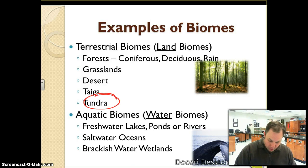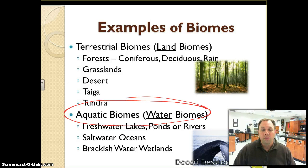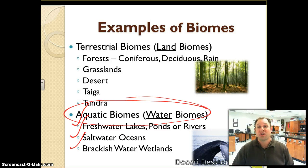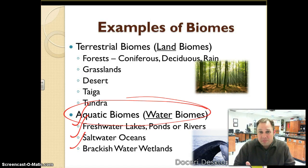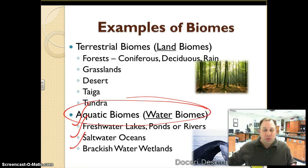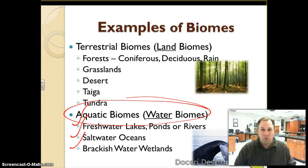Then we have our aquatic biomes, or water biomes. We have freshwater and lakes, saltwater, and brackish water — which is basically halfway between freshwater and saltwater. We can't forget about our aquatic biomes because two-thirds of the planet is covered in water and tons of plant and animal life live in these watery areas. Each one of these biomes has a very specific climate with animals and plants adapted to live there.